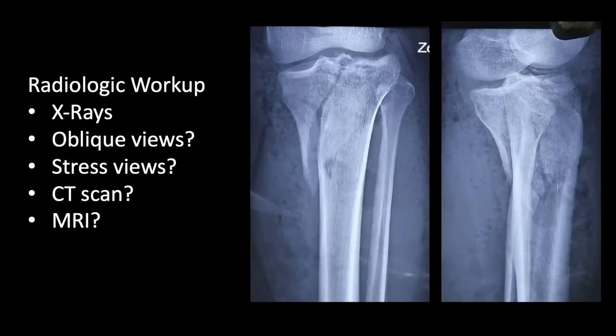So we've talked about x-rays, oblique views, stress views, MRI, and CT scan. Just a quick word about classification before the CT scan: most of us classify according to the Schatzker classification, with the two most common systems being Schatzker and AO/OTA. By this stage, we all agree this is a Schatzker type IV — the medial tibial plateau fracture.